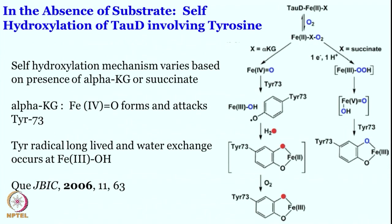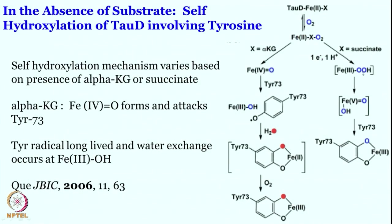This is not entirely new: iron(III)-hydroperoxo species can form essentially because iron(II) reduces oxygen to give iron(III)-superoxo — one electron transfer from iron(II) into oxygen gives iron(III)+ and O2•- (superoxo). Then you give one electron and one proton, and that superoxo radical becomes iron(III)-hydroperoxo. This iron(III)-hydroperoxo can undergo further cleavage of the oxygen-oxygen bond to form an iron(V)-oxo-hydroxy species.